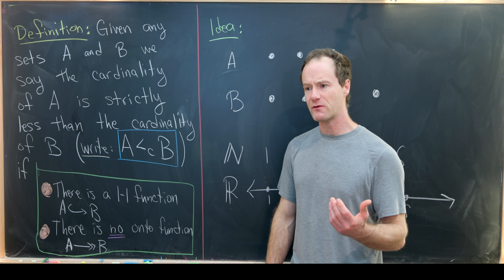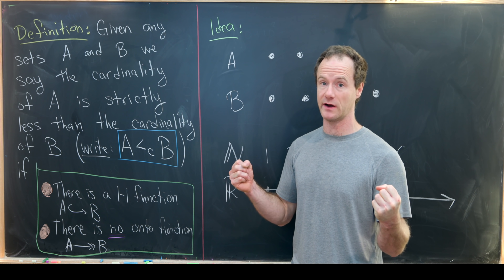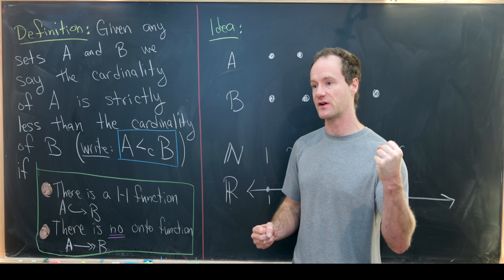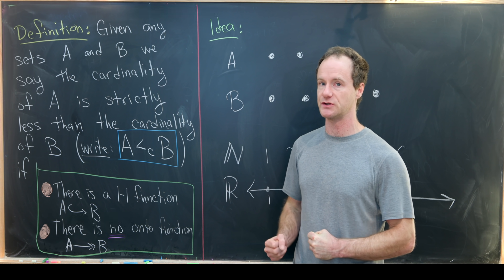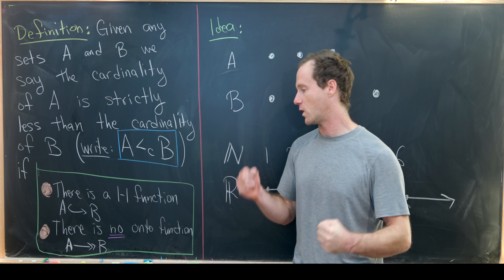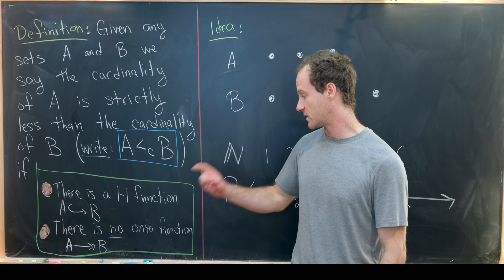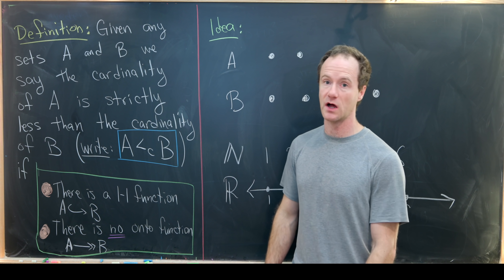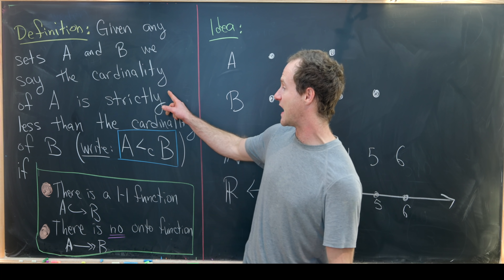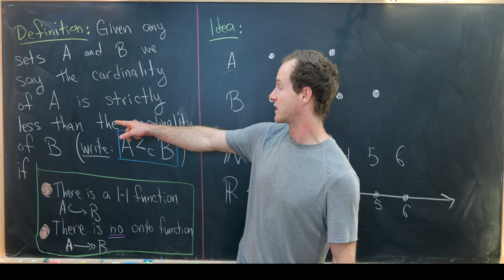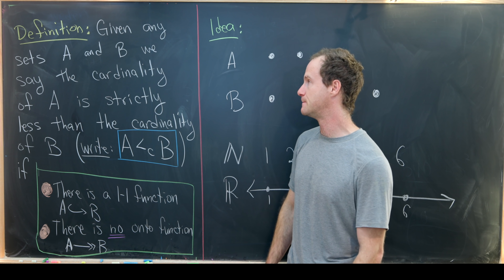You might recall that we say sets have the same cardinality if there is a one-to-one and onto function from one to the other. So if you just have a one-to-one function but no onto function, then you have a strict inequality in terms of cardinality.